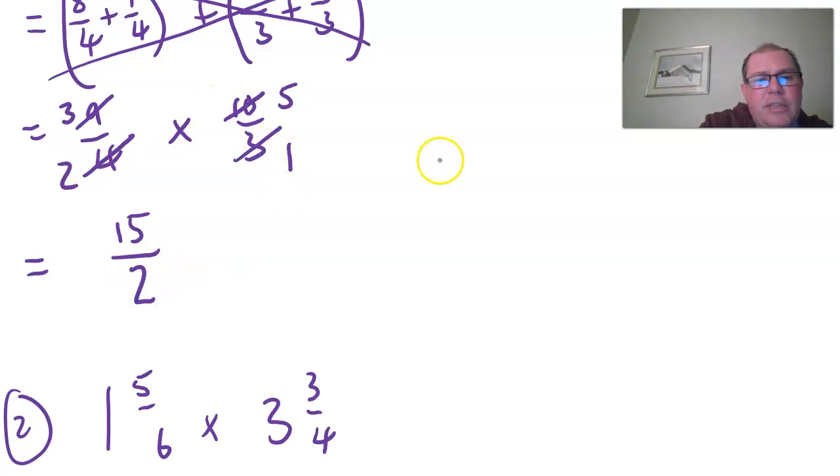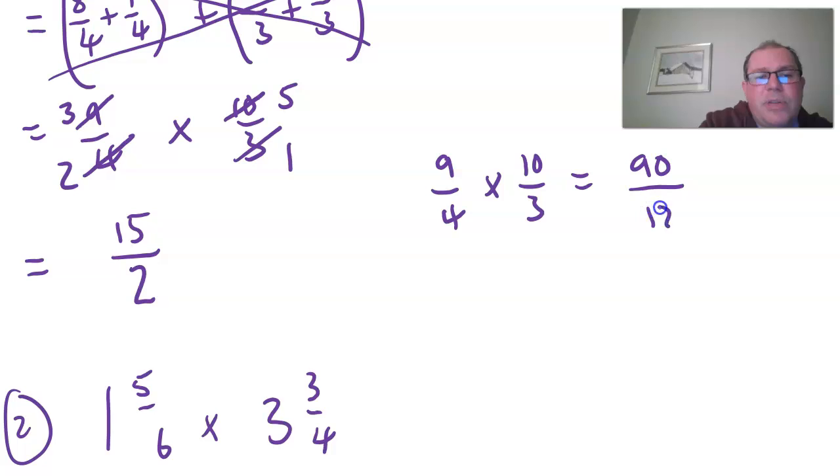If you choose not to cancel it will still work. Nine quarters times ten thirds. You will get nine times ten is ninety. Four times three is twelve. And then divide top and bottom by six and you'll get fifteen over two, the same answer.